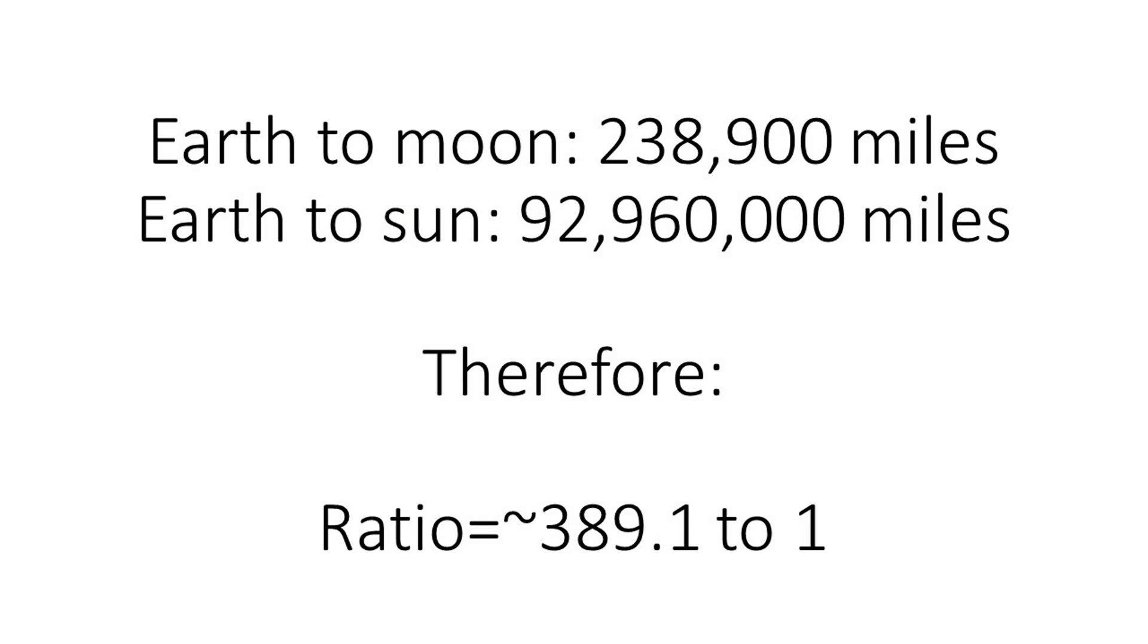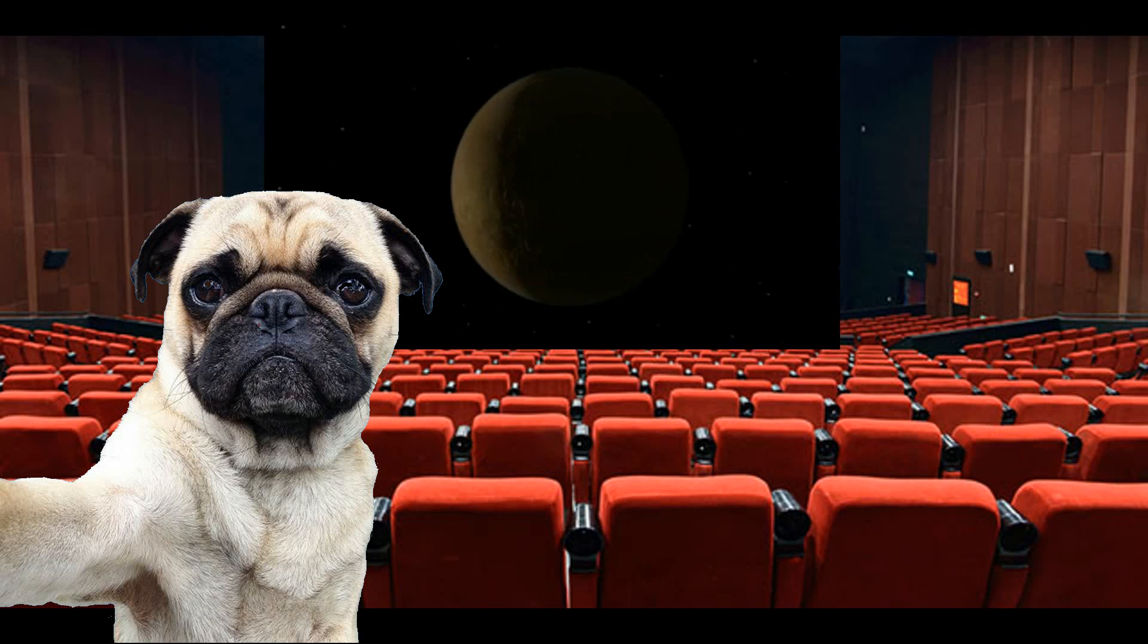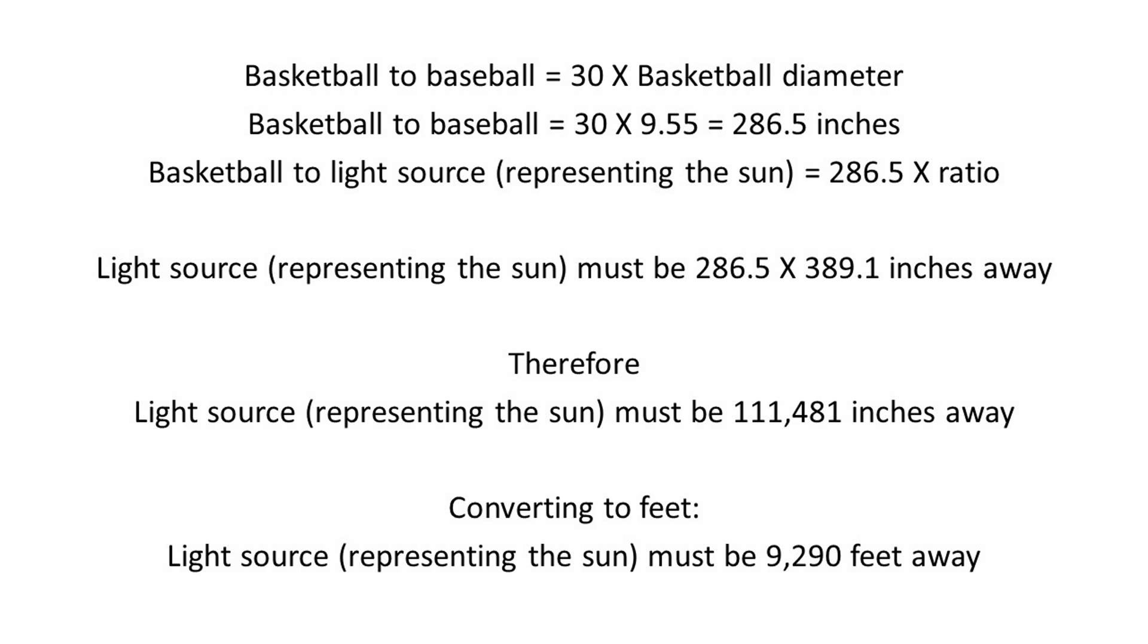The math to do that is not all that complicated. All we have to do is take the Earth to Moon distance, which is approximately 238,900 miles, and the Earth to Sun distance, which is 92 million 960,000 miles, and find out the ratio between those two. That ratio happens to be approximately 389.1.